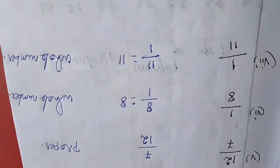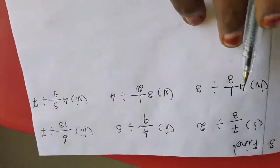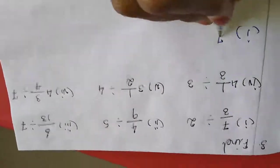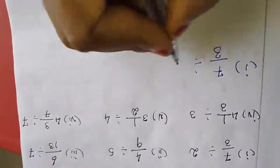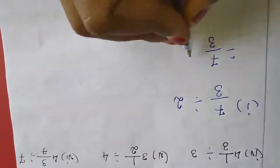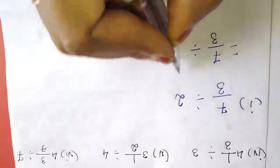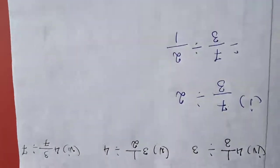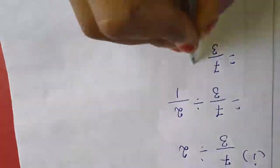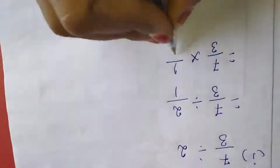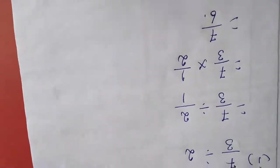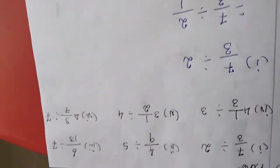Now moving to the third sum — it is also division only. The first sum is 7/3 divided by 2. First, write the first fraction 7/3, then divided by — I am changing this whole number as a fraction 2/1. Change the divide symbol, then take the reciprocal: 7/3 multiplied by 1/2, which gives 7/6. This is the answer for the first sum.